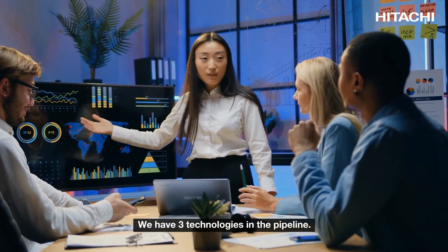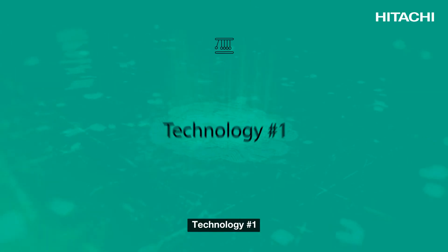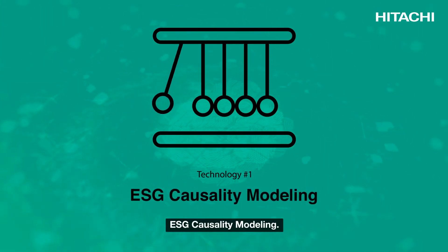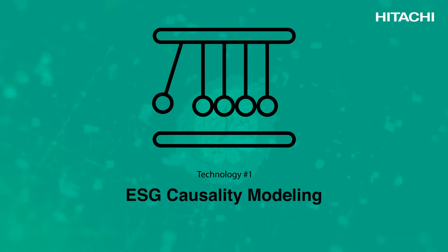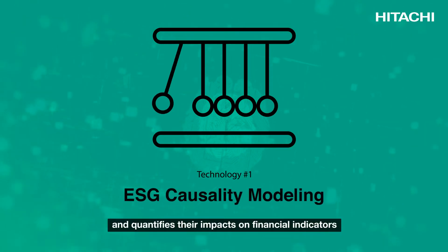We have three technologies in the pipeline. Technology number one, ESG causality modeling. This technology deep dives into the ESG indicators and quantifies their impacts on financial indicators.